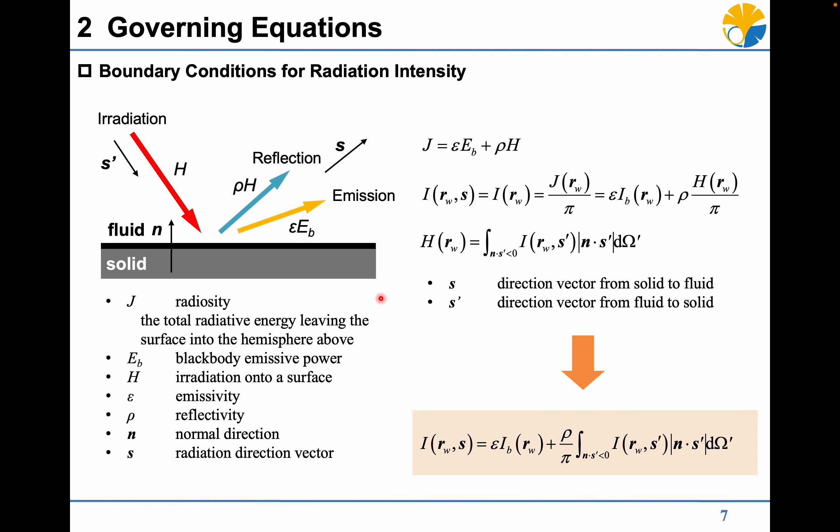To apply the immersed boundary method to radiative transfer equation, the boundary conditions for radiation intensity considering the reflection and emission should be introduced for diffusely emitting and reflecting opaque surfaces.